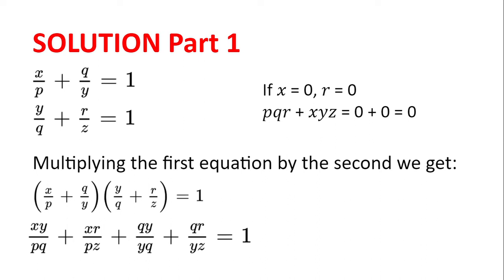We then get PQR plus XYZ equal to 0 plus 0, which is 0, as required. Now we will move on to the main case. Multiplying the first equation by the second equation, we get (X divided by P plus Q divided by Y) multiplied by (Y divided by Q plus R divided by Z) equals 1 multiplied by 1, which is 1. Expanding this, we get XY divided by PQ plus XR divided by PZ plus QY divided by YQ plus QR divided by YZ equals 1.